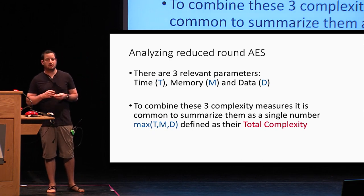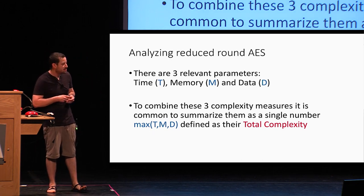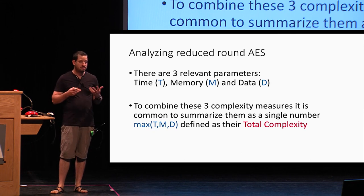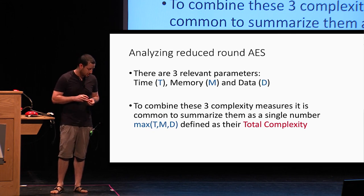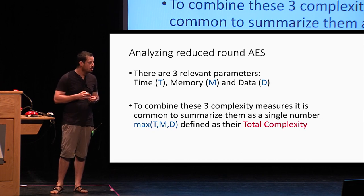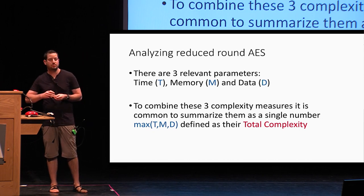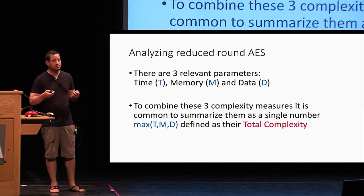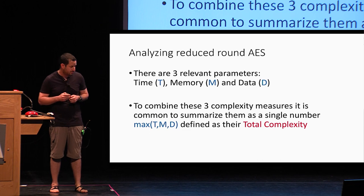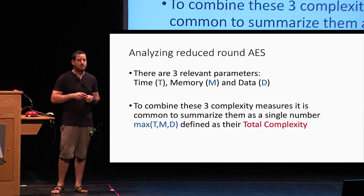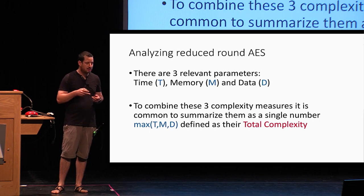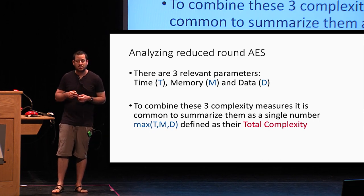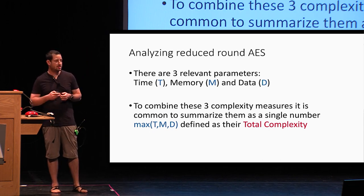When we do cryptanalysis attacks, we have three main parameters: the time complexity of the attack — how much CPU power we need — the amount of memory we need to store in order to run our attack, and how much data, or how many different encryptions we need to see in order to break the cipher. To combine those three complexity measures, it is common to use a single number called the total complexity, which is basically the max of those three parameters.